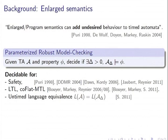This was observed: the enlarged or program semantics can add undesired, qualitatively different behavior. This was first observed for clock shifts and then for clock imprecisions. Because of this problem, parameterized robust model checking was studied. Given a timed automaton A and a property phi, we want to decide if there exists a bound delta on the imprecisions small enough so that the enlarged automaton satisfies phi. This is decidable, and has been studied for safety, linear-time properties, fragments of MTL, and timed/untimed language equivalence.